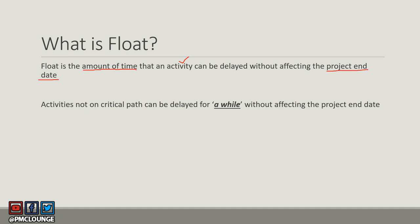This connects to what we discussed about activities not on the critical path. The key point is that activities NOT on the critical path can be delayed for a while without affecting the project end date — and the value of that 'a while' is precisely known as float.